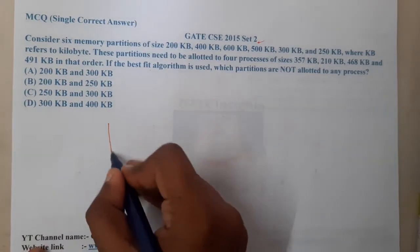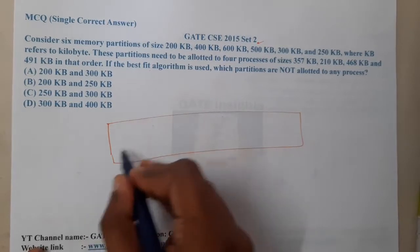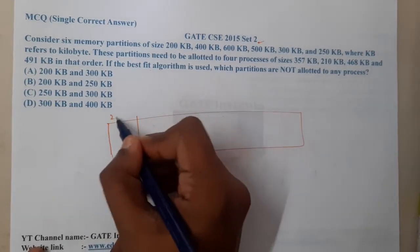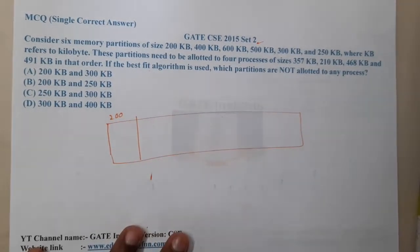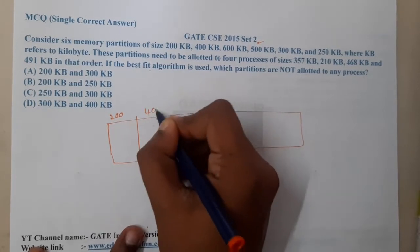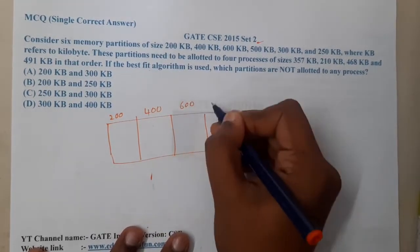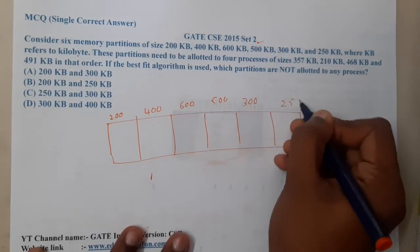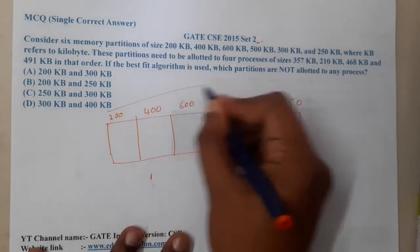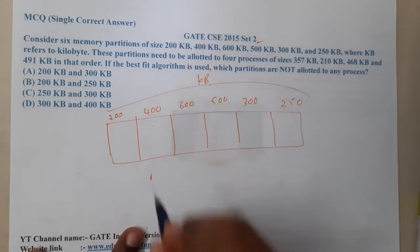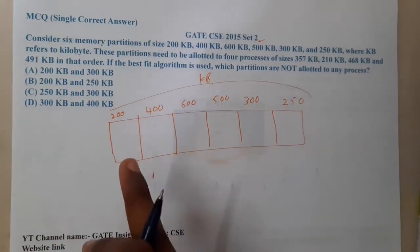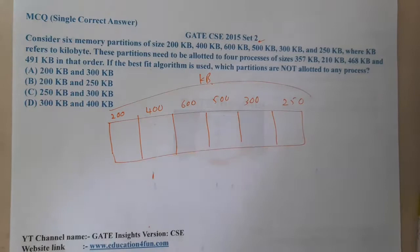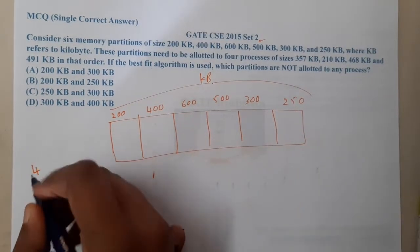The given question is: consider six memory partitions - 200 KB, 400 KB, 600 KB, 500 KB, 300 KB, 250 KB. All of them are in terms of KBs only.